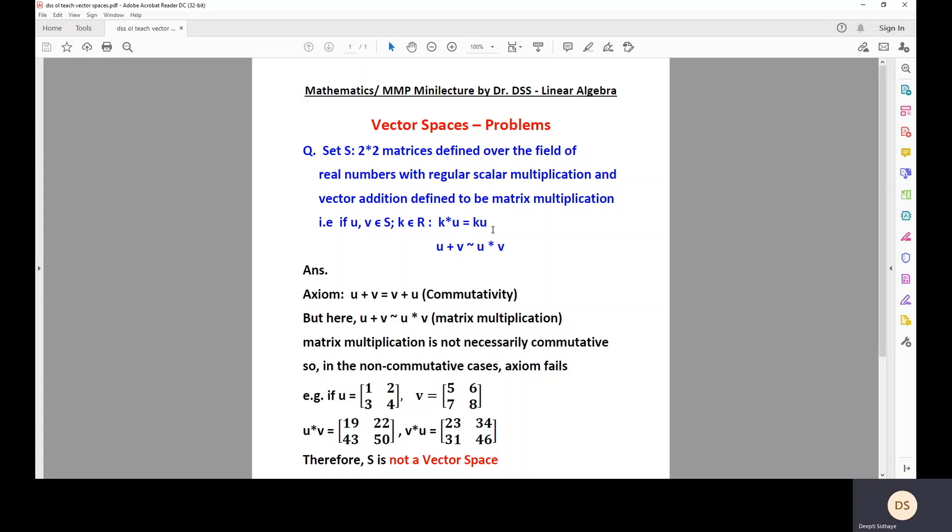But when you add two vectors, vector addition, it is defined to be matrix multiplication. That means if you add the matrices U plus V, it is defined to be the multiplication of the matrices U and V. That is how it is defined.